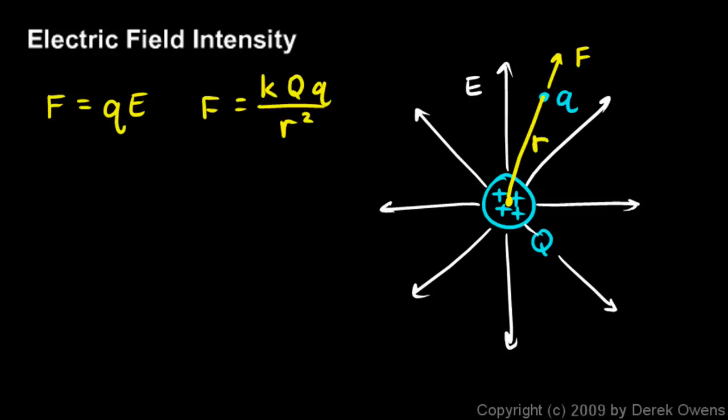Really the distance from the center of one to the center of the other. Now we have these two equations, and both of these are equations for force. So just apply a little bit of logic here. If force is equal to this, and force is equal to that, then this must equal that. So qE has to equal k times big Q times little q over r squared. So let's write that: qE equals kQq over r squared.